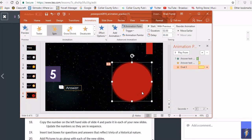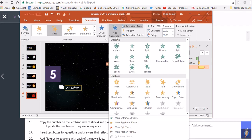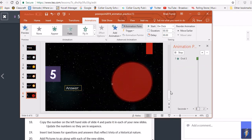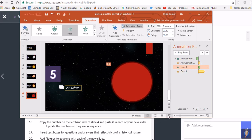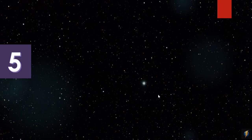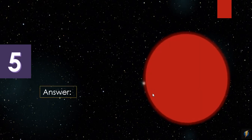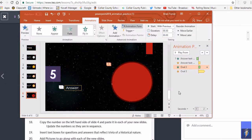To avoid giving away the answer, add another animation — a Fade In — and set it to With Previous as well. Reorder so the question comes in first, then on click the answer comes in, and the planet fades in and starts spinning at the same time. The Animation pane is really important when you're getting creative with multiple animations.